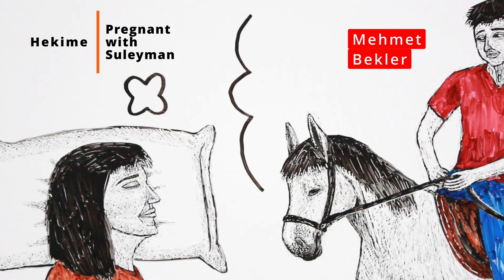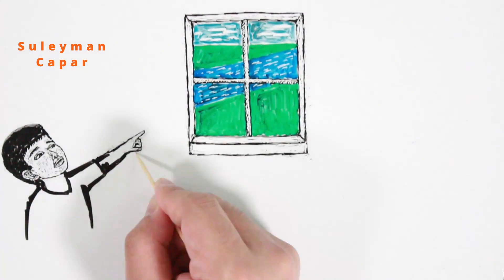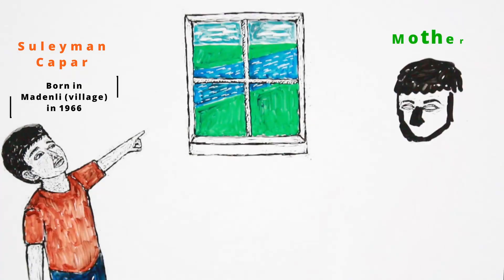Hakim didn't know who the man was, and at the time, she didn't think the dream was important. In 1966, a year after the death of Mehmet Bekler, Suleyman was born in the village of Maddenly.